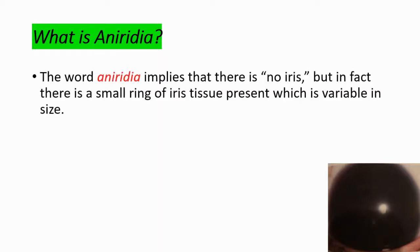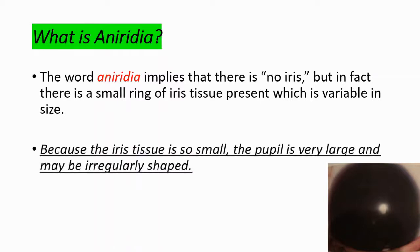The topic we're going to discuss in this video is aniridia. What is aniridia? The word aniridia implies that there is no iris, but in fact there is a small ring of iris tissue present, which is variable in size. Because the iris tissue is so small, the pupil is very large and may be irregularly shaped.